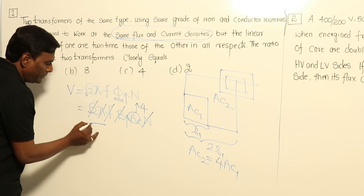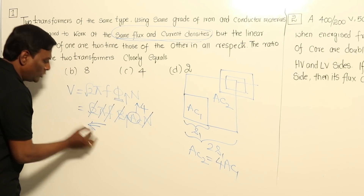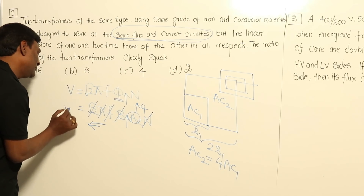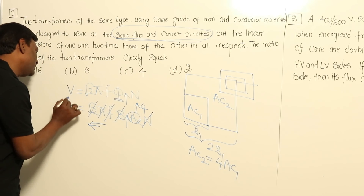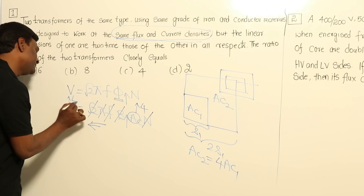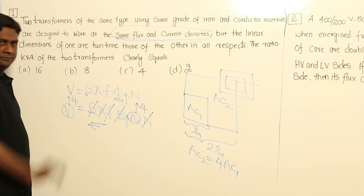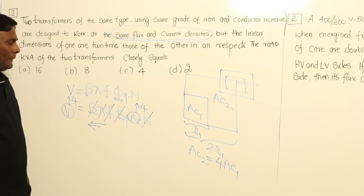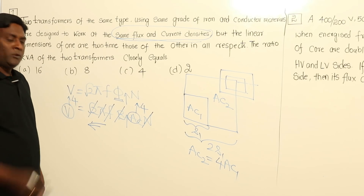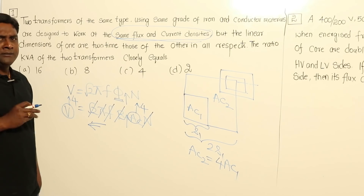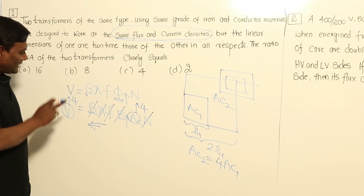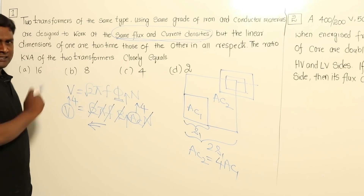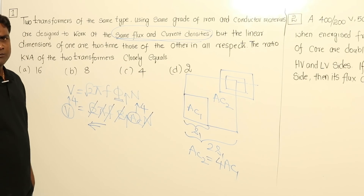Since voltage is directly proportional to the area of cross section of the core, voltage is increased by 4 times in the second case. Now, KVA equals voltage multiplied by current. In the second case, voltage is increased by 4 times. Now let us find how the current changes.